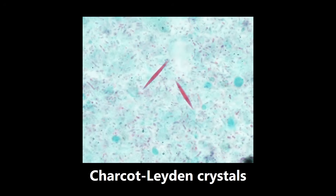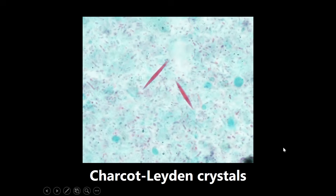This next one is an example of Charcot-Leyden crystals — crystalline aggregates of major basic protein, which comes from eosinophils. This is seen in bronchial asthma. If you watched the first video, there was another image associated with asthma — Curschmann spirals. So Curschmann spirals and Charcot-Leyden crystals both point to pulmonary pathology, possibly asthma. Do not confuse these with the needle-shaped crystals in gout; they are entirely different.